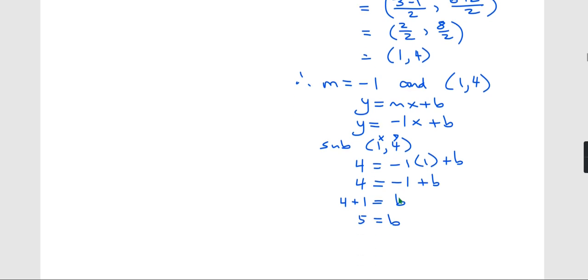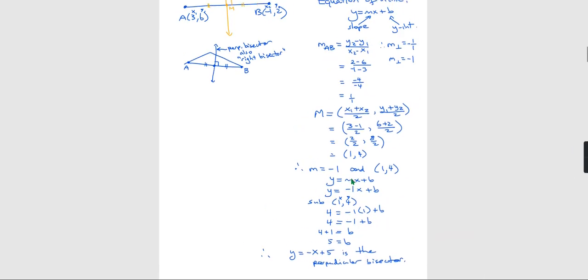And that's the end. Therefore, y equals negative x—so I won't write negative 1, hopefully you know that's there—plus 5 is the perpendicular bisector. And now we have the full solution.